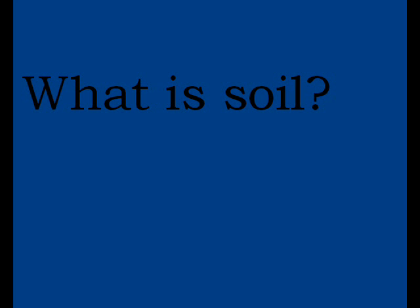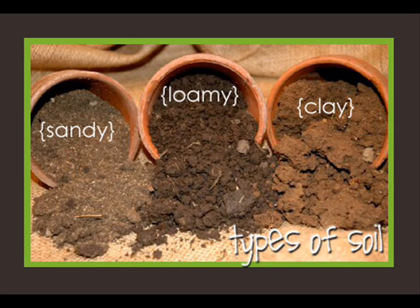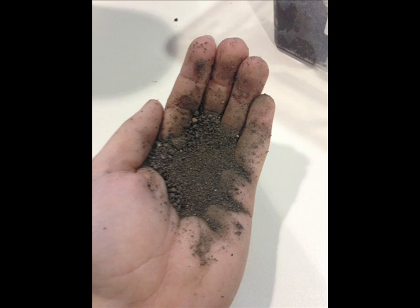What creates soil? Soil is made up of three things: clay, silt, and sand. Depending on how much of each is in your soil depends on what type of soil you have. There are a variety of different types of soil. If you look at the following pictures, it will help you decide what type of soil you have.